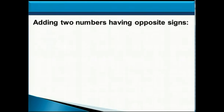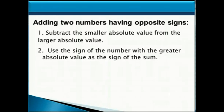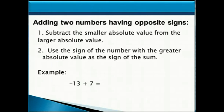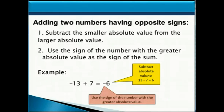Now let's look at the rule for adding two numbers having opposite signs. Instead of adding their absolute values, when they have opposite signs, we need to subtract the smaller absolute value from the larger absolute value — basically finding the difference between the two absolute values. Then we use the sign of the number with the greater absolute value as the sign of our sum. For example, adding negative 13 and positive 7, those two numbers have opposite signs, so we take 13 minus 7, which gives us 6. Negative 13 has the greater absolute value and it's negative, so the sum is also negative.